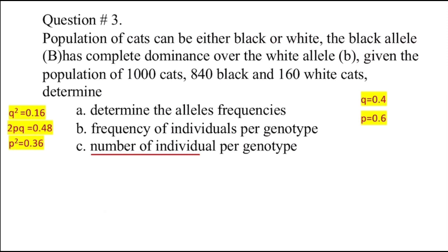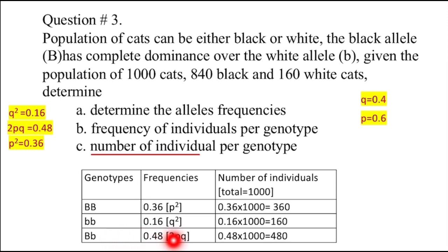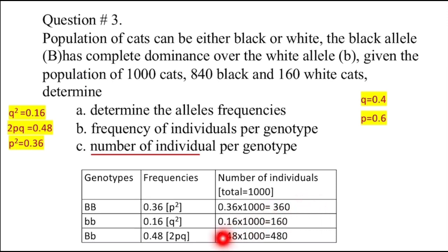In the last part, we calculate the number of individuals per genotype by multiplying each frequency by the total population of 1000: homozygous dominant P² → 0.36 × 1000 = 360; homozygous recessive Q² → 0.16 × 1000 = 160; heterozygous 2PQ → 0.48 × 1000 = 480.